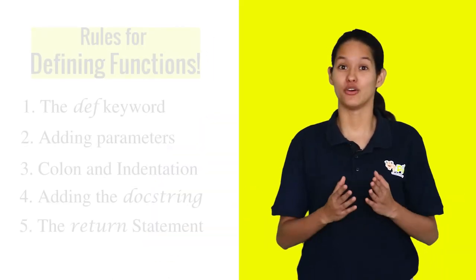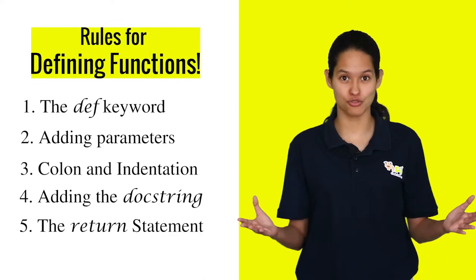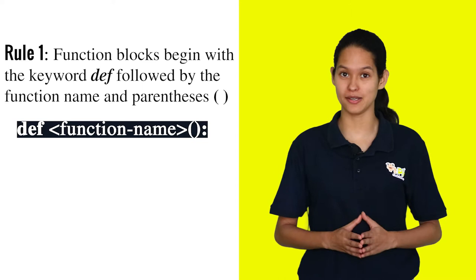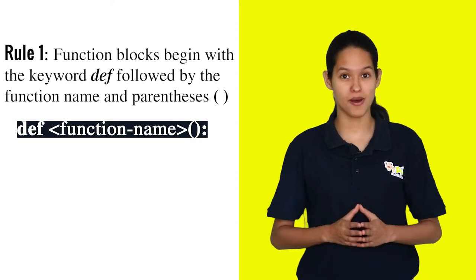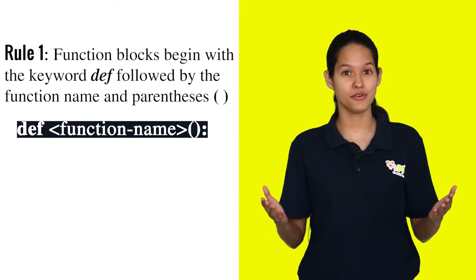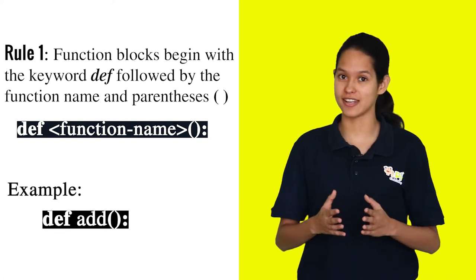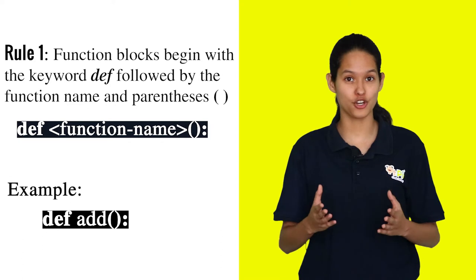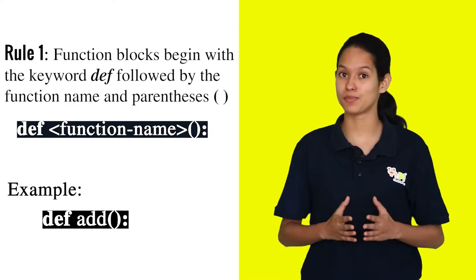In order to create a function, you have to follow the five important rules. Rule 1: Define your function using the keyword def followed by the function name and parenthesis. Here we define the function add followed by parenthesis. In this way, you can recognize a function in your code by its parenthesis.